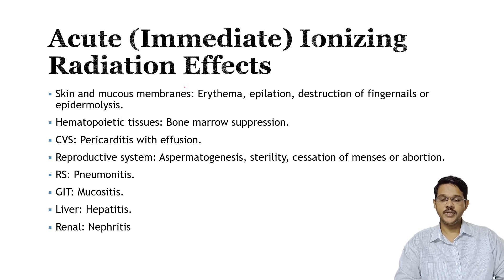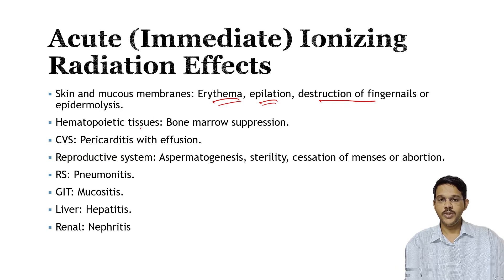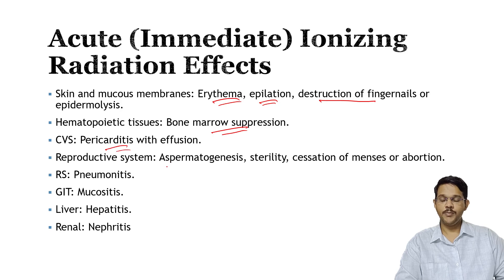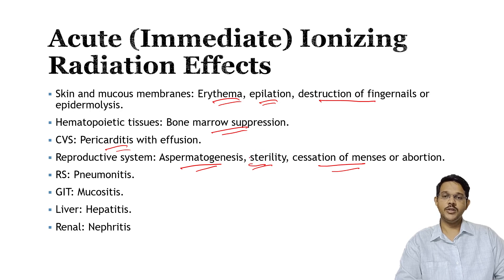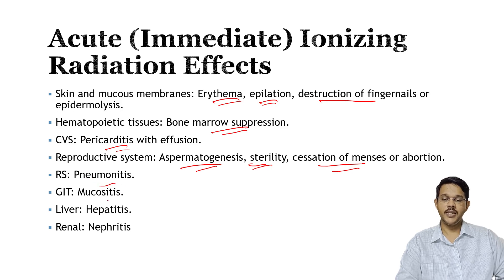The acute effects of ionizing radiation on different parts of the body include: on skin and mucous membranes — erythema, depilation (loss of hair), destruction of fingernails, and epidermal damage. In hemopoietic tissues there may be bone marrow suppression leading to decreased blood count. In the cardiovascular system it may cause pericarditis with effusion. In the reproductive system it may cause azoospermia leading to sterility in males, and cessation of menses or abortion in females. In the respiratory system it may cause pneumonitis; in the GI tract, mucositis; in the liver, hepatitis; and in the renal system, nephritis.